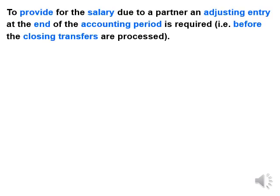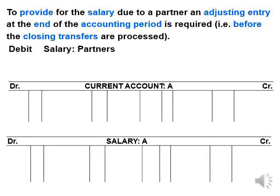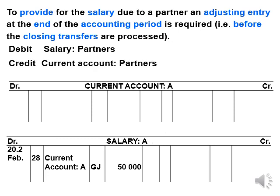To provide for the salary due to a partner, an adjusting entry is made at the end of the accounting period. This is part of the year-end adjustments of a partnership, before closing transfers. We will debit the salary account of a partner — each partner will have his own salary account — and the current account of the partner will be credited. As part of the year-end adjustment, we bring into account the provision for the salaries by debiting the salary account of each partner and crediting the current account of each partner.